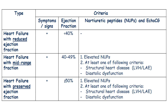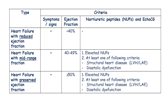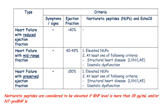Current classification of heart failure is based on ejection fraction. Heart failure with reduced ejection fraction when ejection fraction is less than 40%; heart failure with mid-range ejection fraction when ejection fraction ranges from 40% to 49%; and heart failure with preserved ejection fraction when ejection fraction is 50% and more. Diagnosis of heart failure with preserved or mid-range ejection fraction also requires elevated levels of natriuretic peptides and structural heart disease, such as left ventricular hypertrophy and/or left atrial enlargement, or signs of diastolic dysfunction. Natriuretic peptides are considered elevated when BNP is more than 35 pg/mL and/or NT-proBNP exceeds 125 pg/mL.